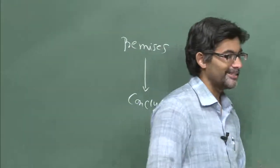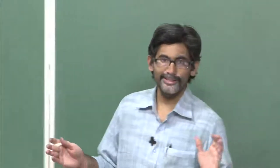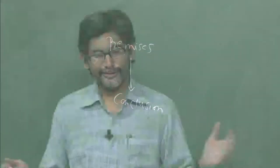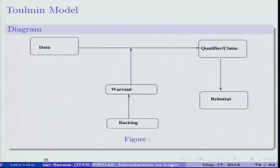This model is widely used in the philosophy community and is one of the important models of argumentation used in any course on theory of argumentation. According to Toulmin, instead of a simple premises-and-conclusion structure, the layout of an argument should have the following features. So first, it should have some kind of data.